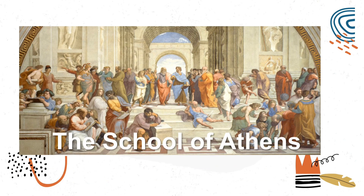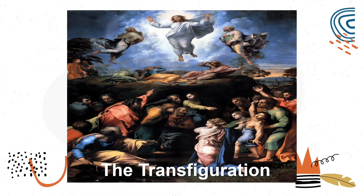Some of his works include The School of Athens, which symbolizes the marriage of art, philosophy, and science, made to decorate the rooms now known as the Stanze di Raffaello in the Apostolic Palace in the Vatican. Next is The Transfiguration, his last painting, depicting the New Testament event when Jesus is transfigured and becomes radiant in glory upon a mountain, with Peter, James, and John present. Jesus begins to shine with bright rays of light, and then Prophet Moses and Elijah appear next to him.